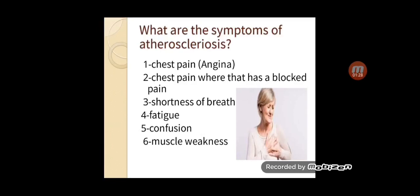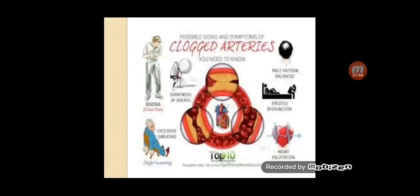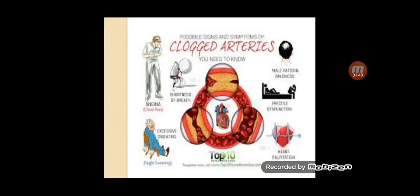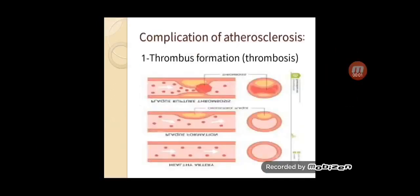Clinical symptoms include pseudoaneurysm confusion, which occurs if blockage affects circulation to the brain. Muscle weakness can occur if blood supply to the legs is interrupted. Other symptoms include shortness of breath, angina, chest pain, night sweating, and heart palpitations.